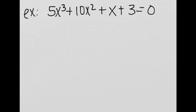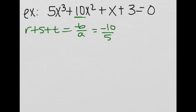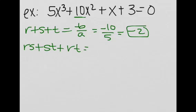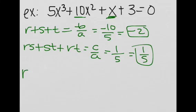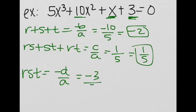Let's do a quick example. First, we find r plus s plus t, which equals negative b over a. Since b equals 10, negative b is negative 10 over a, which is 5, giving us negative 2. Next, rs plus st plus rt equals c over a. Here c equals 1 and a equals 5, so this equals 1 fifth. Finally, r times s times t equals negative d over a, which equals negative d over 5.